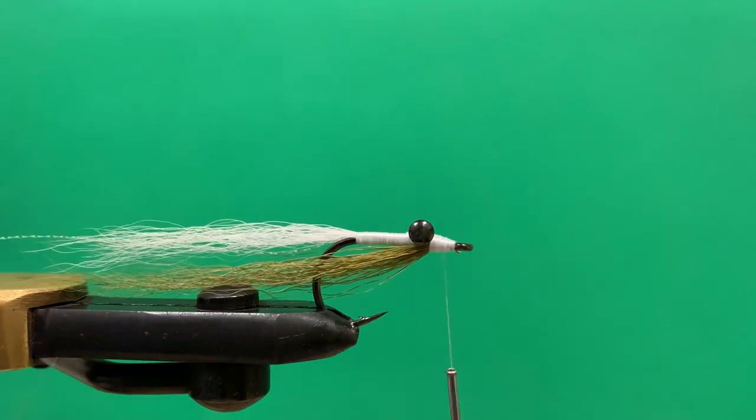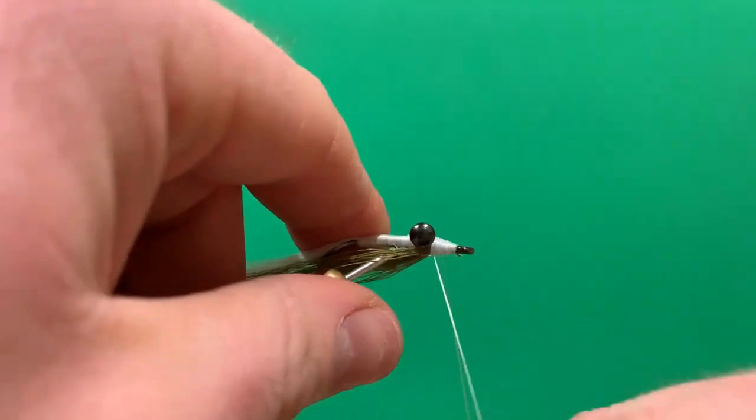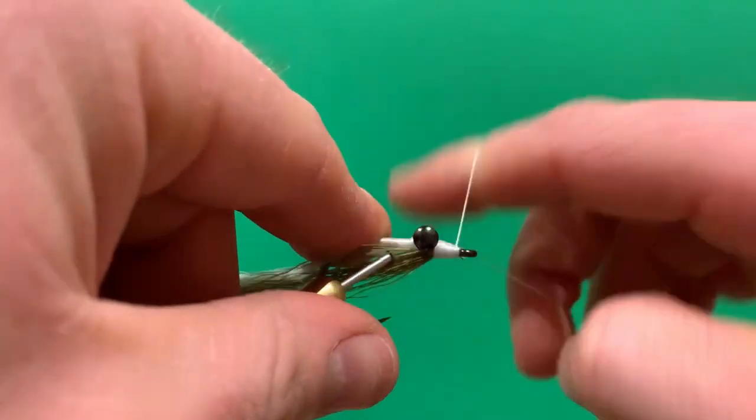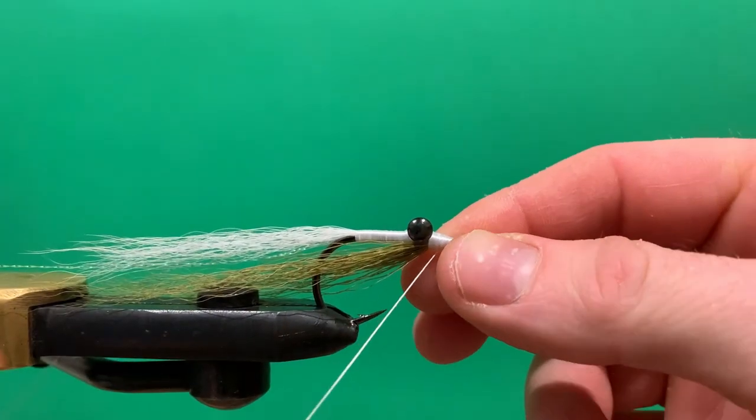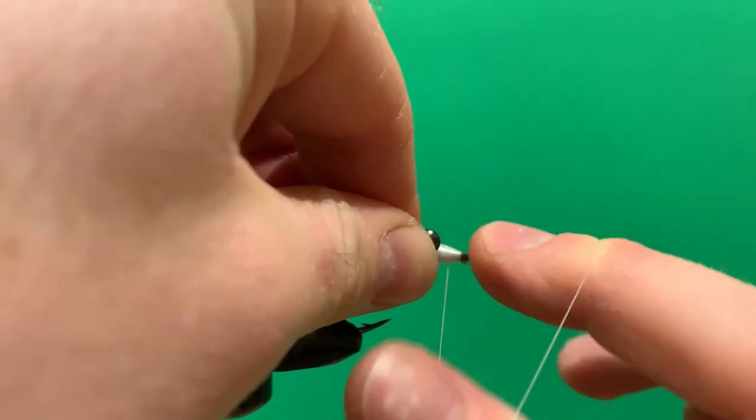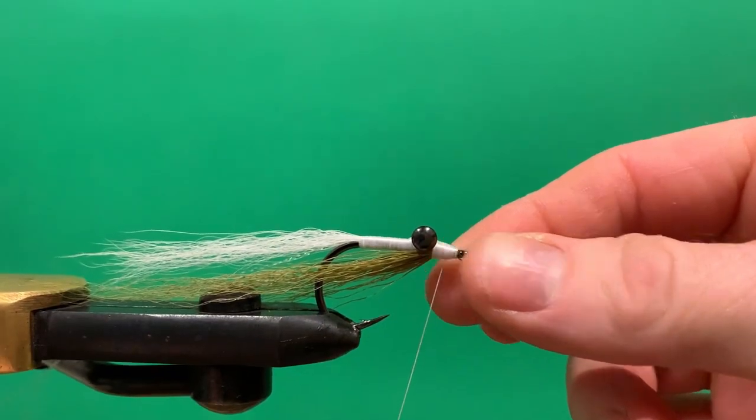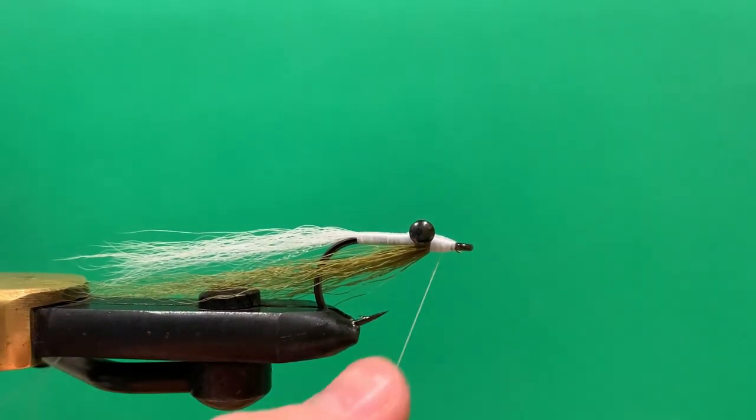Depending on what you prefer, use varnish or super glue or even a resin to finish off the head of the fly.